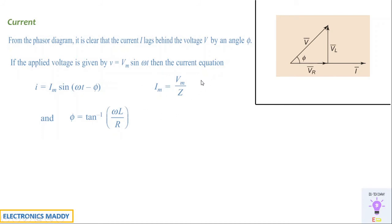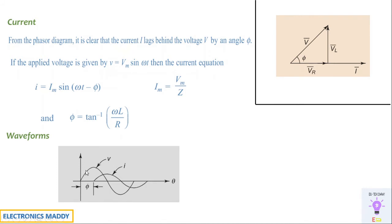So Im = Vm/Z and phi = tan⁻¹(ωL/R). If asked to find the current in a series RL circuit given Vm, Z, L, and R, you find Im and phi and express the current accordingly. Regarding the waveform: since the supply voltage is sinusoidal starting from zero, and I lags V by angle phi, the current waveform is delayed — it starts after V — though we are not concerned with magnitude here.